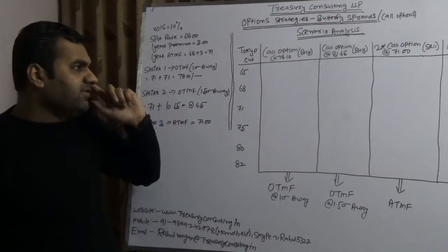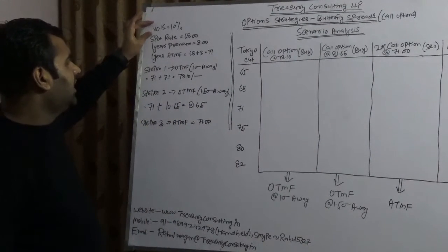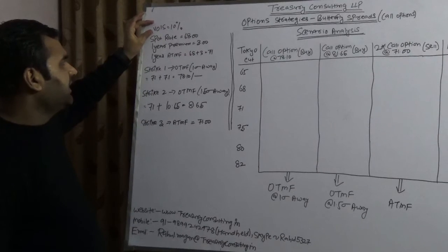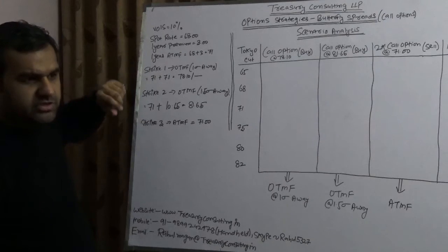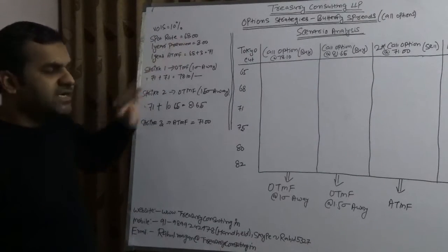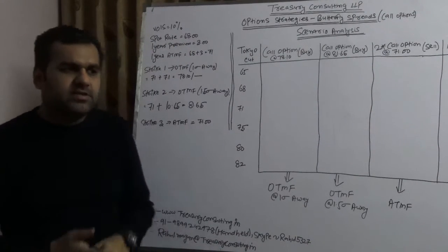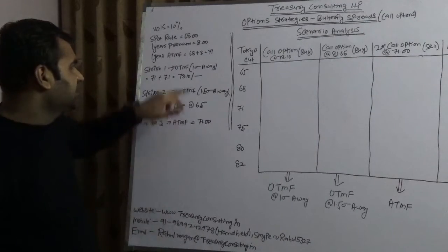Now everything remains intact. We have taken the volatility at 10% because this is what's reflecting on Thomson Reuters now. Spot rate currently high and closed at 68.10, but for the sake of simplicity we have taken 68.